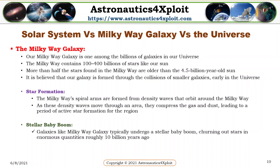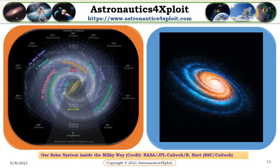Our Milky Way galaxy is one among the billions of galaxies in our universe. The Milky Way contains 100 to 400 billion stars like our sun, and more than half of the stars found in the Milky Way are older than the 4.5 billion year-old sun. It is believed that our galaxy formed as a result of the collisions of smaller galaxies. The Milky Way's spiral arms are formed from density waves that orbit around the Milky Way. As these density waves move through an area, they compress the gas and dust, leading to a period of active star formation. Galaxies like the Milky Way typically underwent a stellar baby boom, churning out stars in enormous quantities, roughly 10 billion years ago. These pictures show our solar system inside the Milky Way.